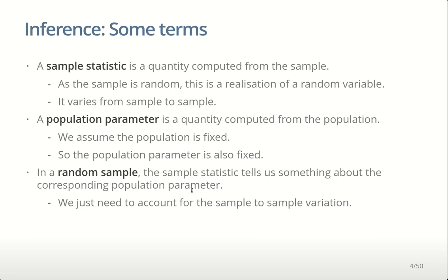In a random sample, the sample statistic tells us something about the corresponding population parameter, because a random sample is representative of the population. But of course a random sample is random, so there's sample-to-sample variation. How can we reconcile these to give a single estimate of what the population parameter is?